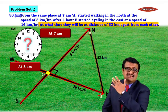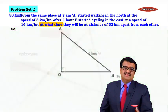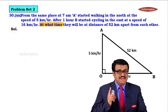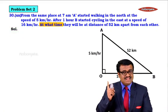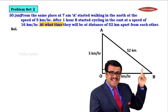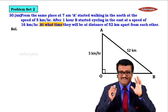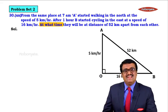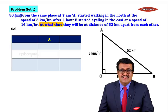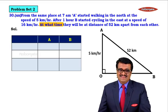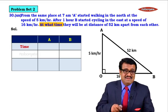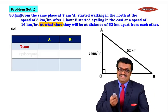If you can see, this forms a right-angled triangle. So let us draw right-angled triangle AOB. The speed of A is 5 km per hour, speed of B is 16 km per hour, and the distance between A and B is 52 km. Now let us tabulate this data — first for A and then for B — and find the time taken by each.